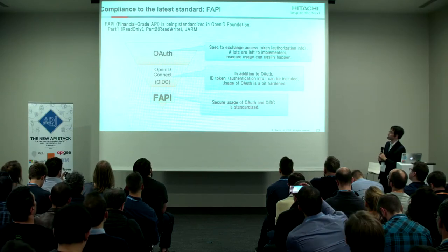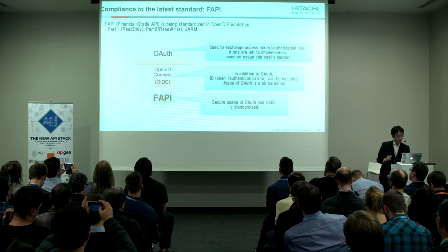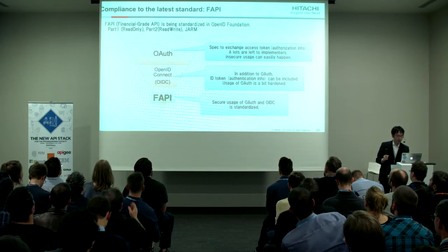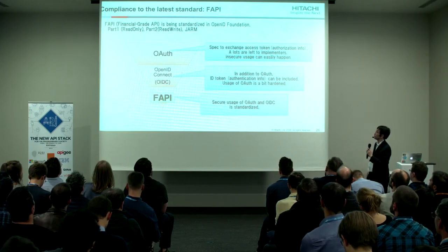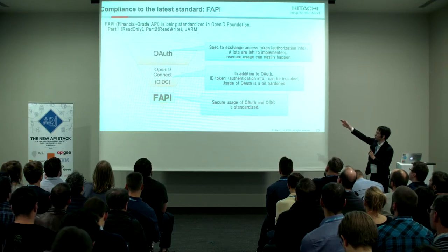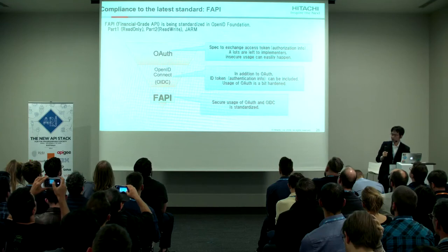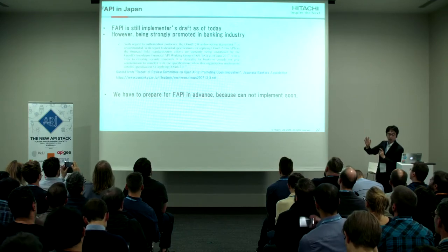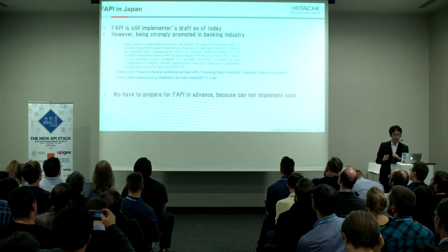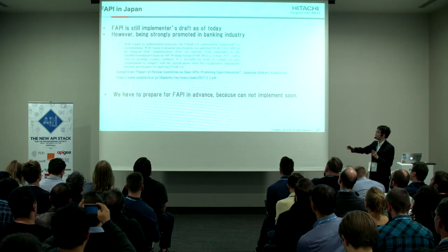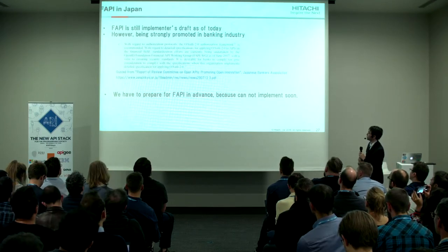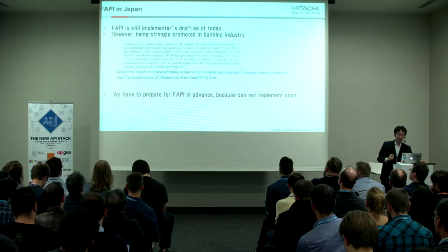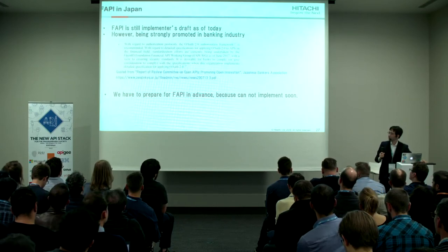The last topic is compliance to the latest standard called FAPI. FAPI is being standardized in the OpenID Foundation. It is composed of Part 1, Part 2, and JAR. FAPI is the hardening of OAuth and OpenID Connect for financial industries. FAPI is still being implemented as a draft, however it is very strongly promoted in the Japanese banking industry. We have to prepare for FAPI in advance because it takes time to implement.